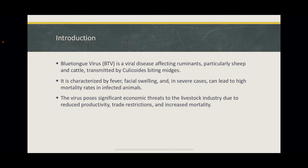Blue tongue virus is a vector-borne viral disease that primarily affects ruminants including sheep and cattle. Classified within the genus Orbivirus, BTV is known for its distinctive clinical sign of cyanosis, or blueness around the mouth, nose, and hooves. The disease can result in significant economic loss due to decreased milk production, weight loss, and in severe cases, high mortality rates.